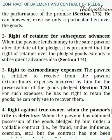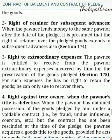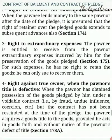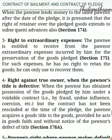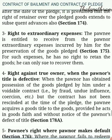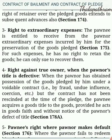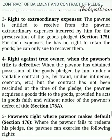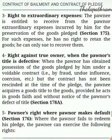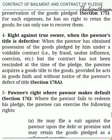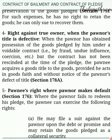Third, right to extraordinary expenses: The pawnee is entitled to receive from the pawner extraordinary expenses incurred by him for the preservation of the goods pledged. Section 175. For such expenses, he has no right to retain the goods; he can only sue to recover them. Fourth, right against the true owner when the pawner's title is defective: When the pawner has obtained possession of the goods pledged by him under a voidable contract, that is, by fraud, undue influence, coercion, etc., but the contract has not been rescinded at the time of pledge, the pawnee acquires a good title to the goods, provided he acts in good faith and without notice of the pawner's defect of title. Section 178.